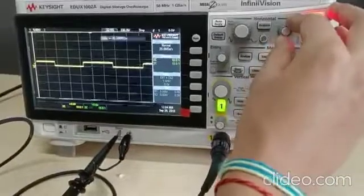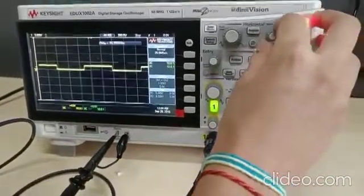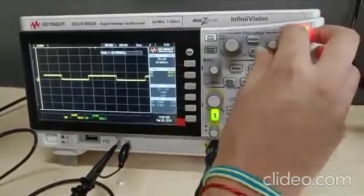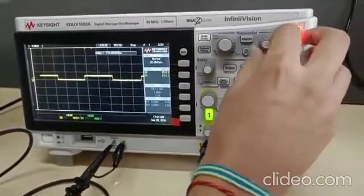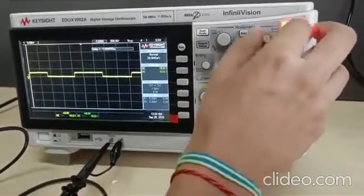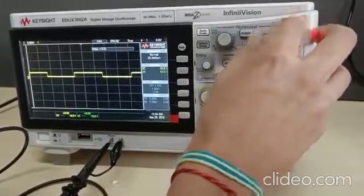This is X position knob. By moving it clockwise, we can move the waves along the positive X axis. And by moving it anti-clockwise, we move the wave along negative X axis.